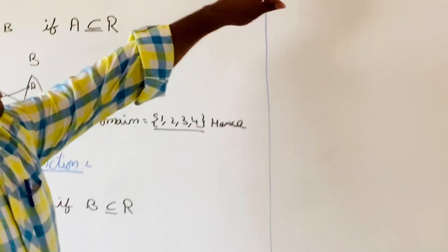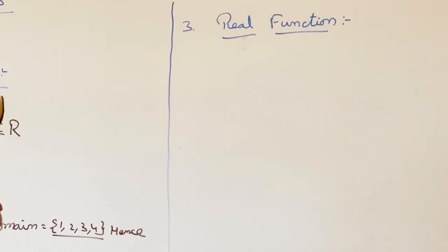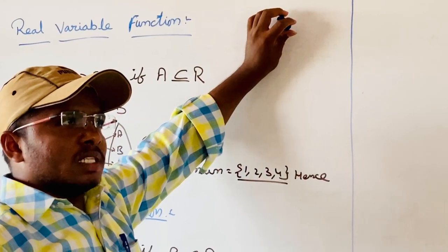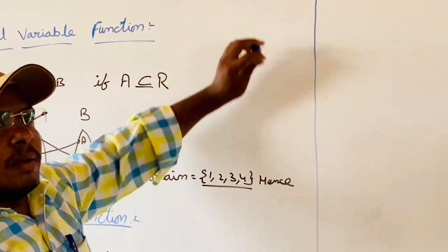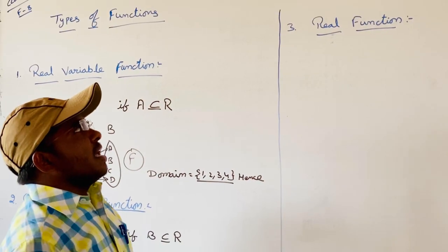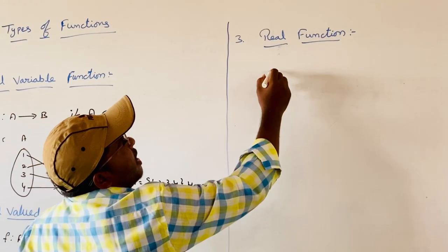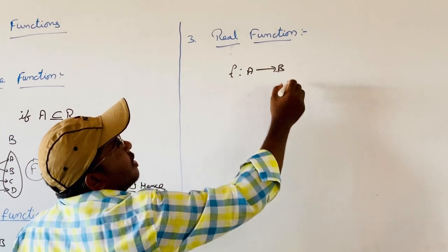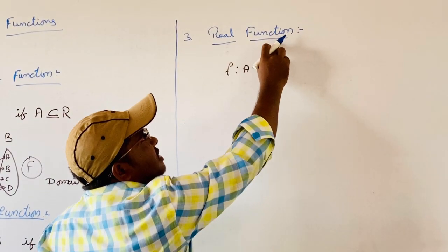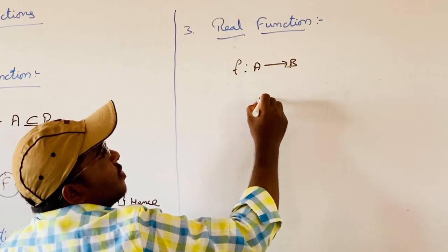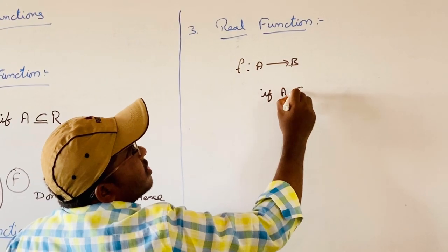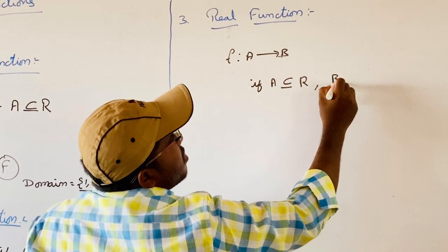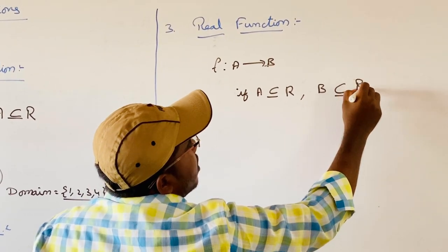Next one is real function. If both domain and range are subsets of real numbers, then it is called a real function. A function F mapping A to B is said to be a real function if A is a subset or equal to R and B is a subset or equal to R.